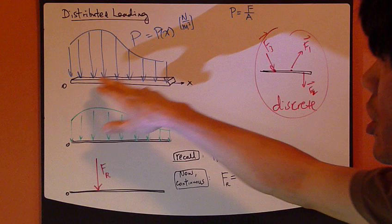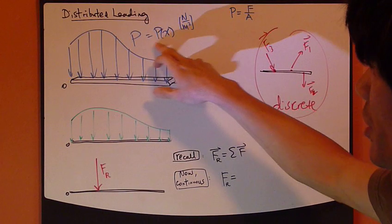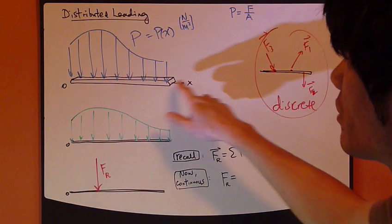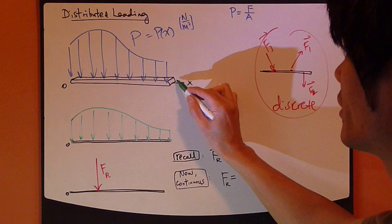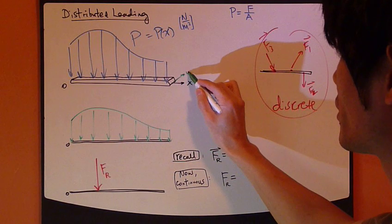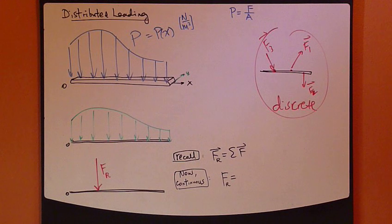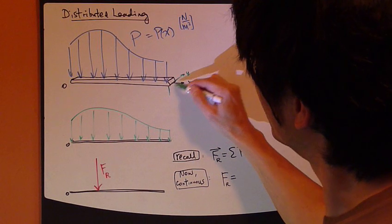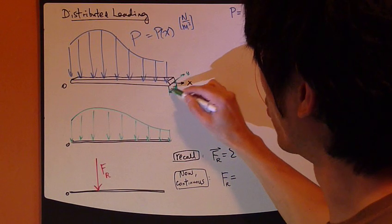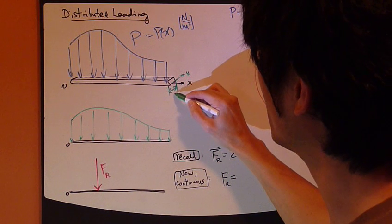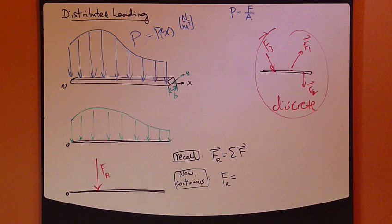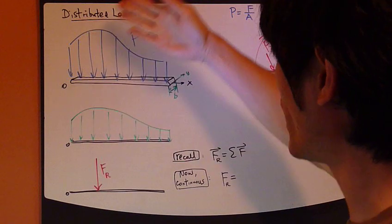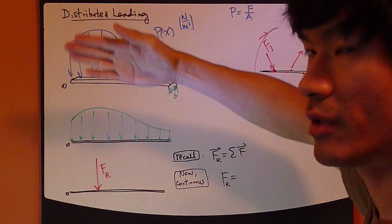Now this pressure is a function of x. It varies in the x direction only. So it doesn't change in the y direction. Let's say this is my y direction going there. So let's say this little section of bridge has a width of b. So since this b is constant and pressure in the y direction is also the same.